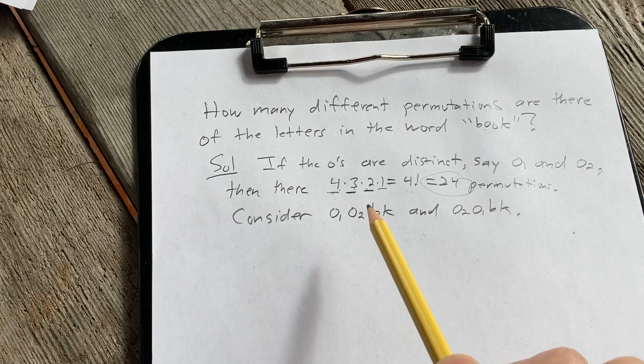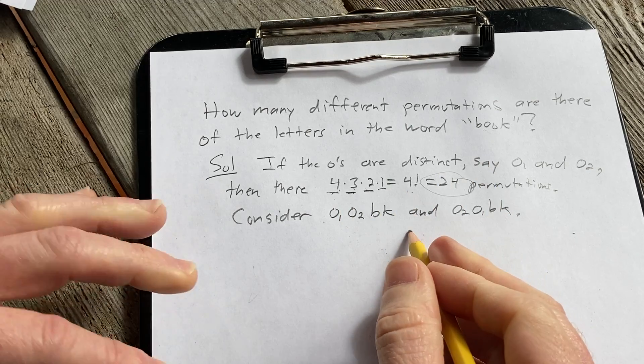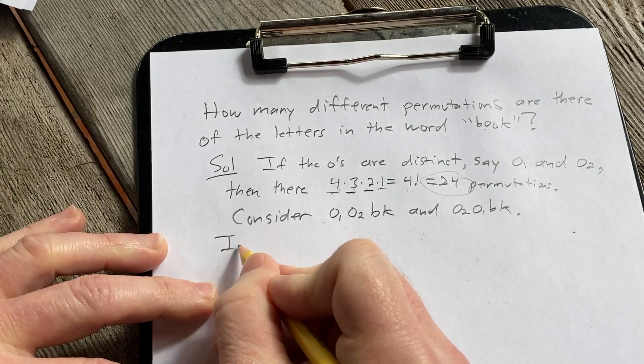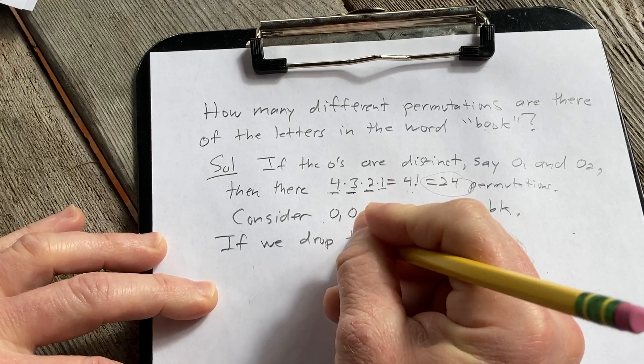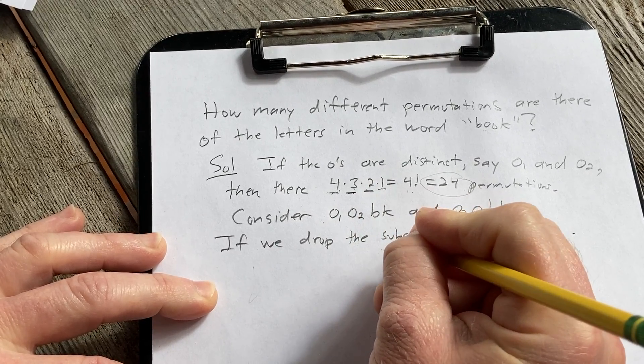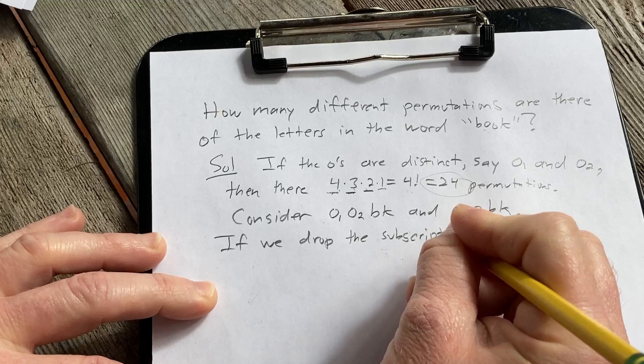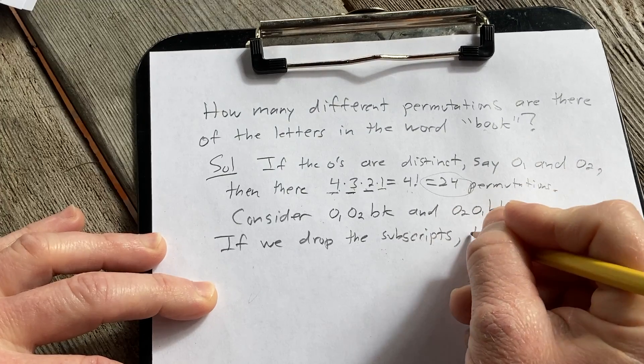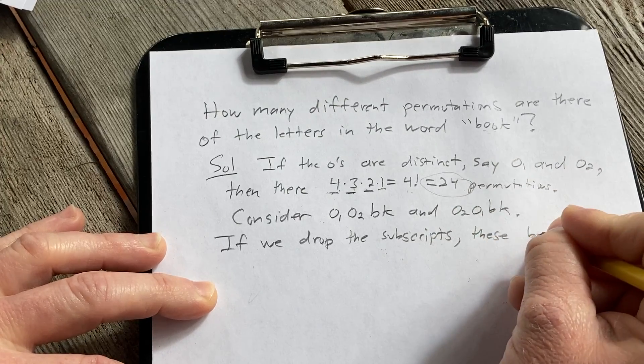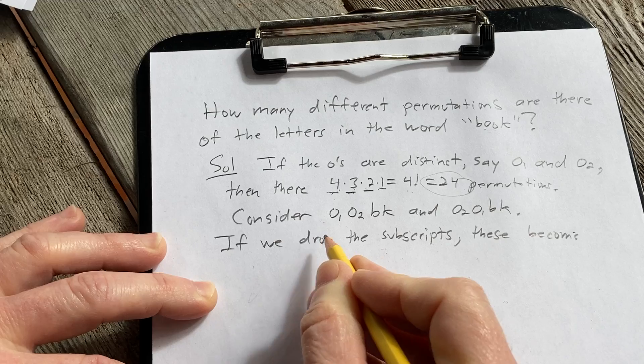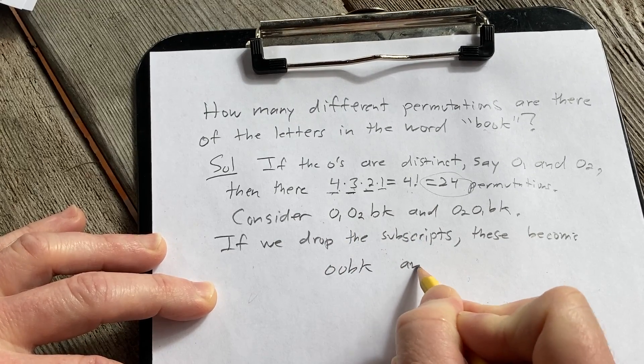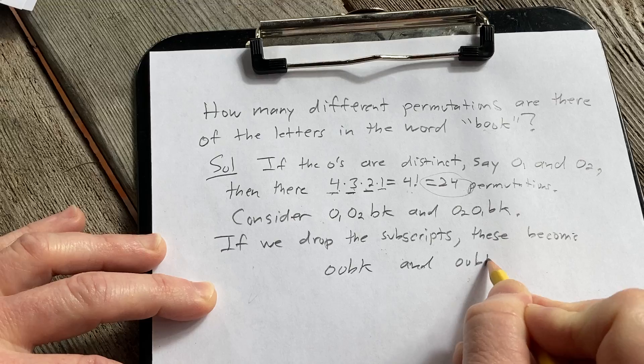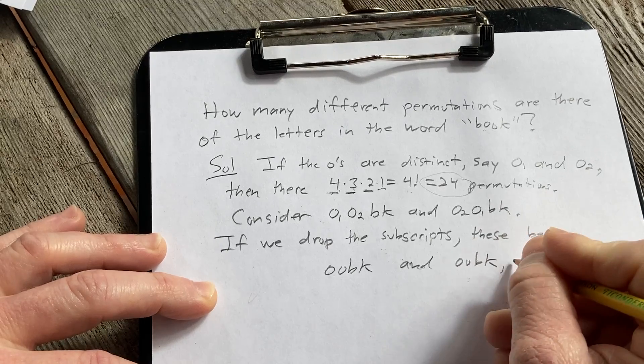So if we drop the subscripts, these become OO, BK, and OO, BK, which are the same.